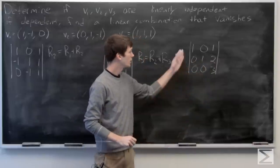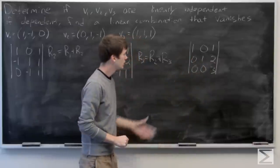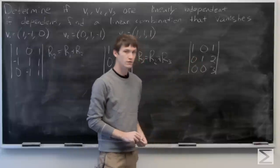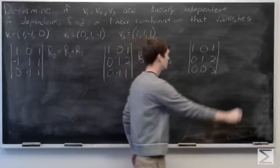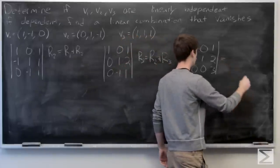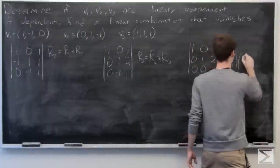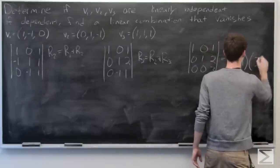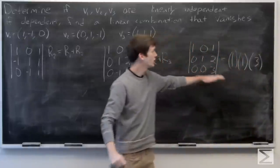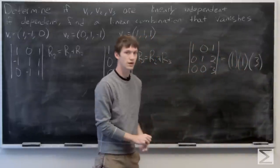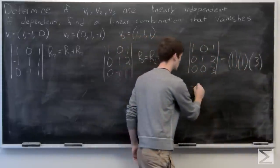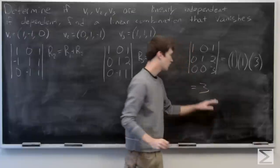Now we have an upper triangular matrix, so we can use our properties of the determinant to tell us that our determinant is equal to 1 times 1 times 3, just multiplying along the diagonal. So our determinant is equal to 3.